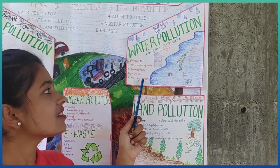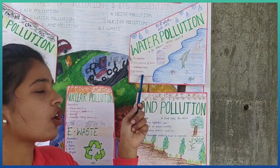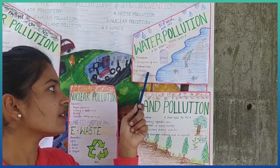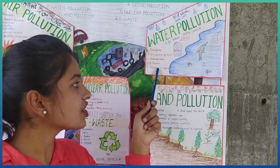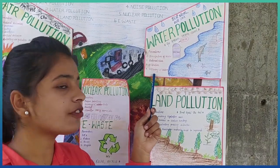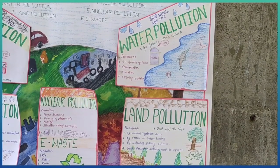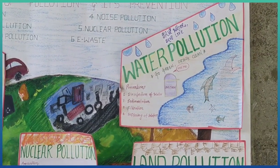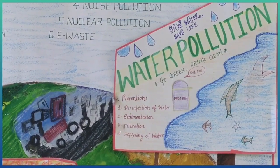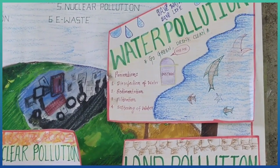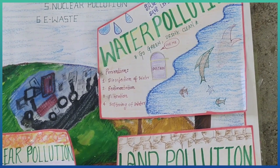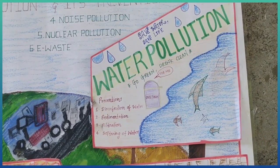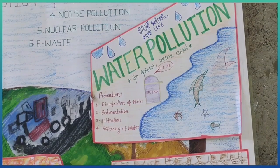The second is water pollution. Prevention of water pollution can be done by disinfection of water, sedimentation, filtration, and softening of water. Disinfection of water is the process of killing organic life — that is bacteria — to make water safe for drinking. This can be done by chlorination. Sedimentation is the process used to remove the suspended material from water.